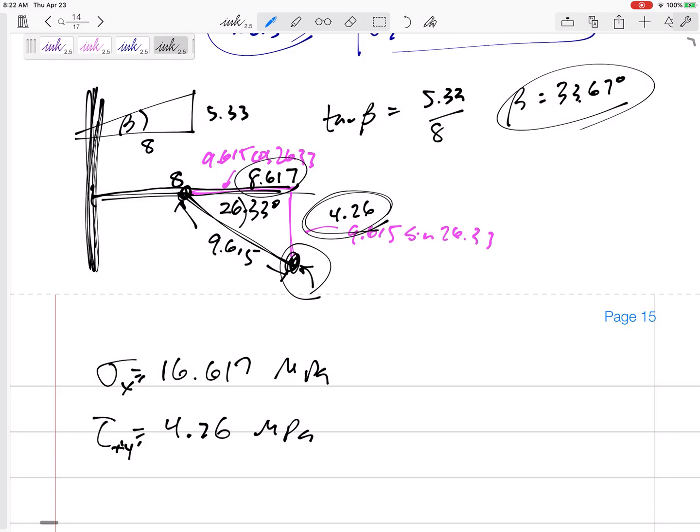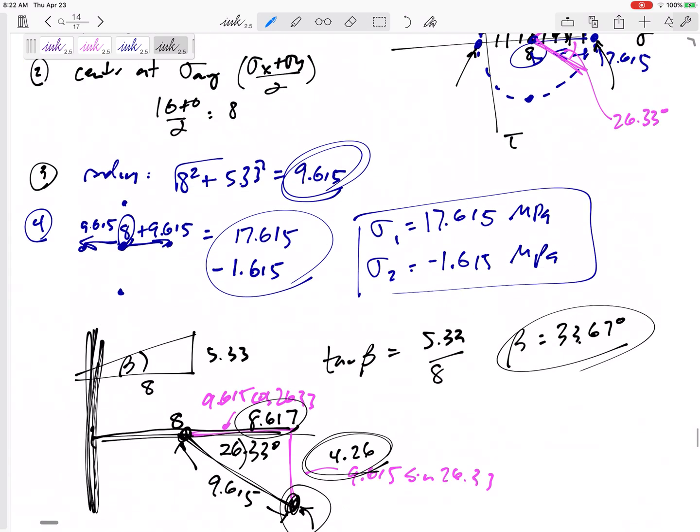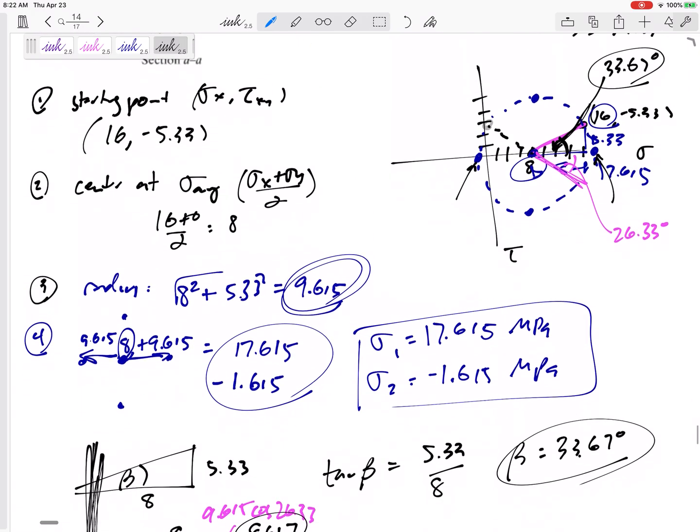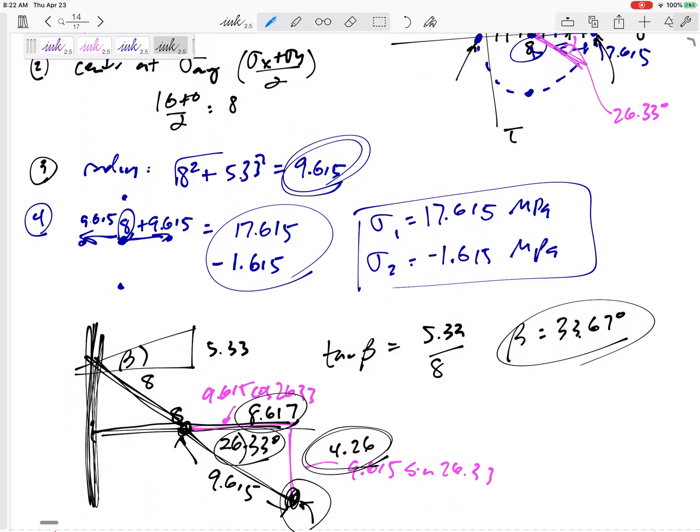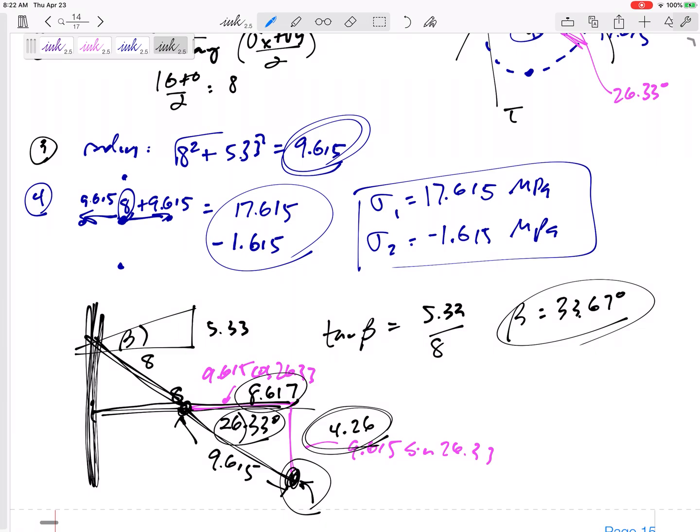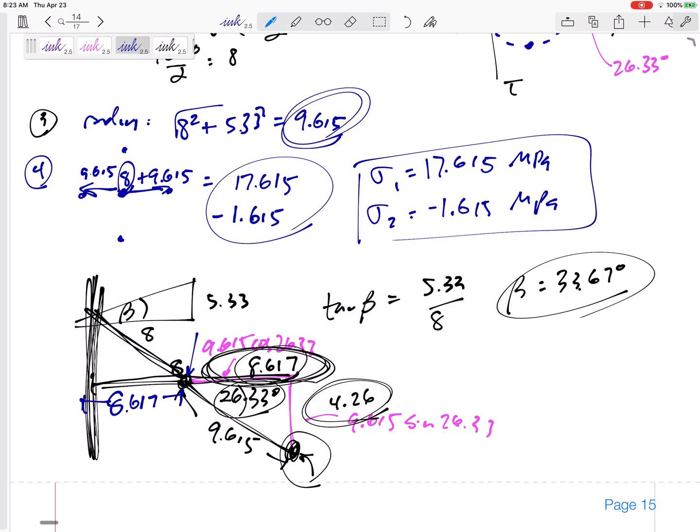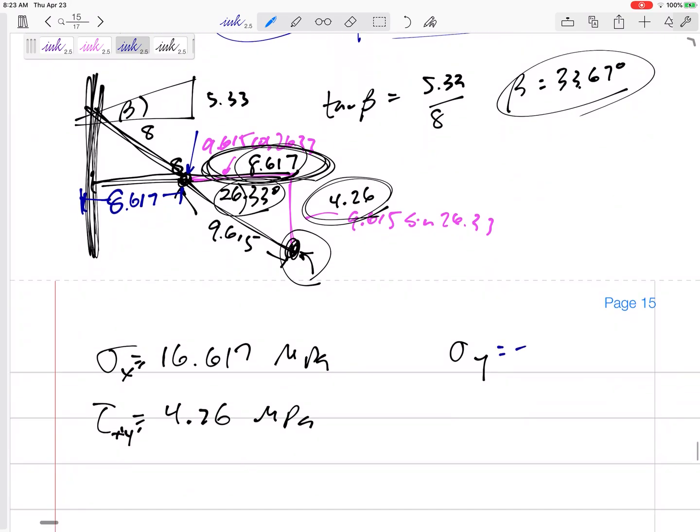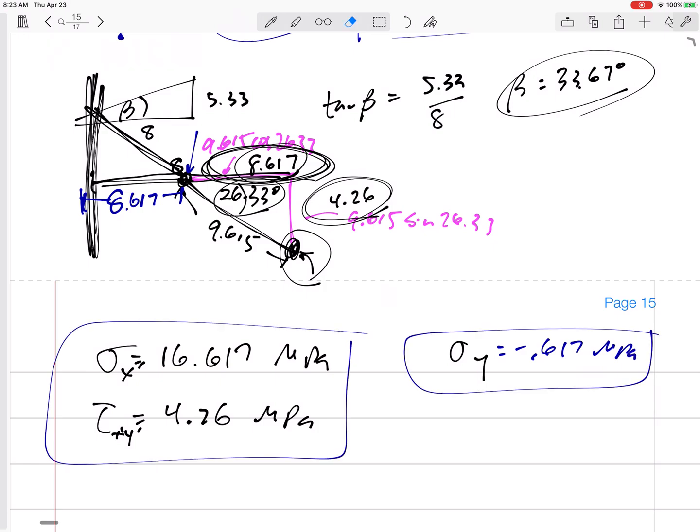The coordinates are not 8.617, 4.26. They are, let's see, 16.617. So here my sigma is 16.617 MPa. And yes, my tau is 4.26 MPa. So this is my new sigma x, I call it sigma x prime. And my new tau, tau x prime, y prime. I'm almost there. I need my sigma y. Where's my sigma y? Sigma y is over here on the other side. But it is still a 26.33 degree angle. It still has this base of 8.617. So if I start at 8 and go backwards, 8.617, then I'm at negative 0.617 MPa. And there's my sigma y.